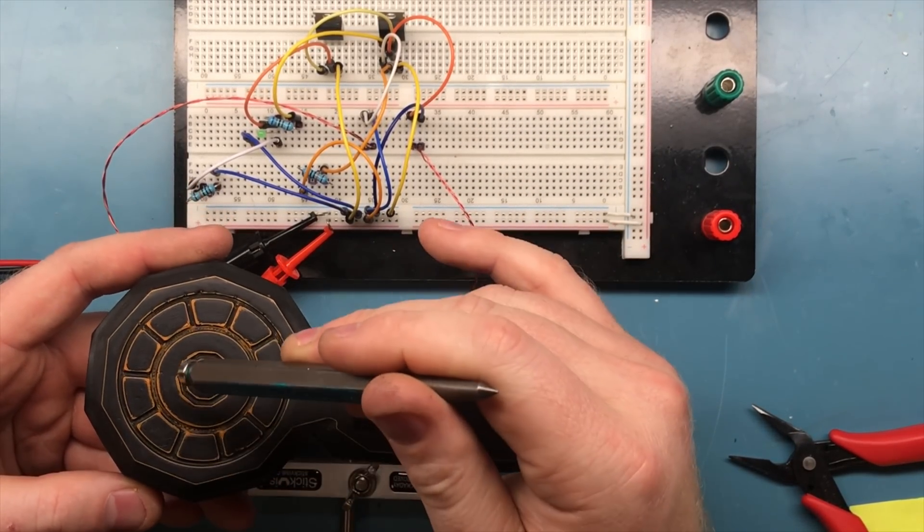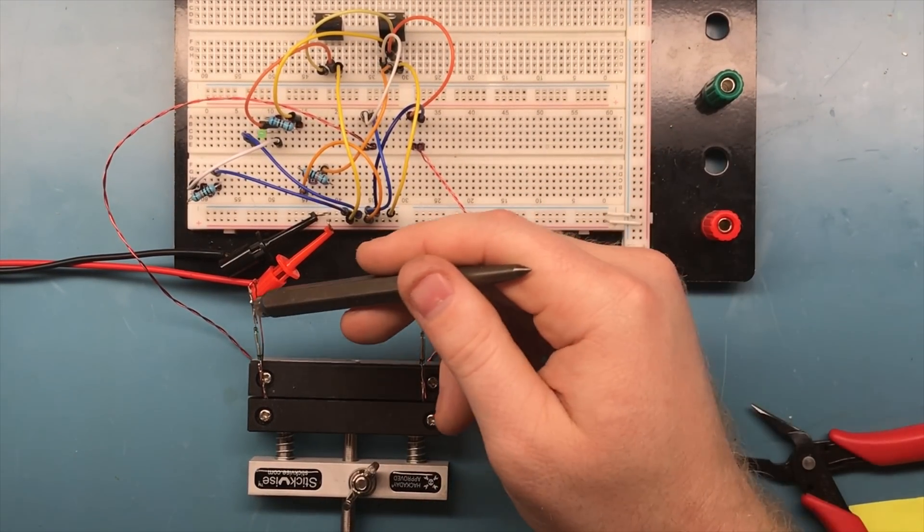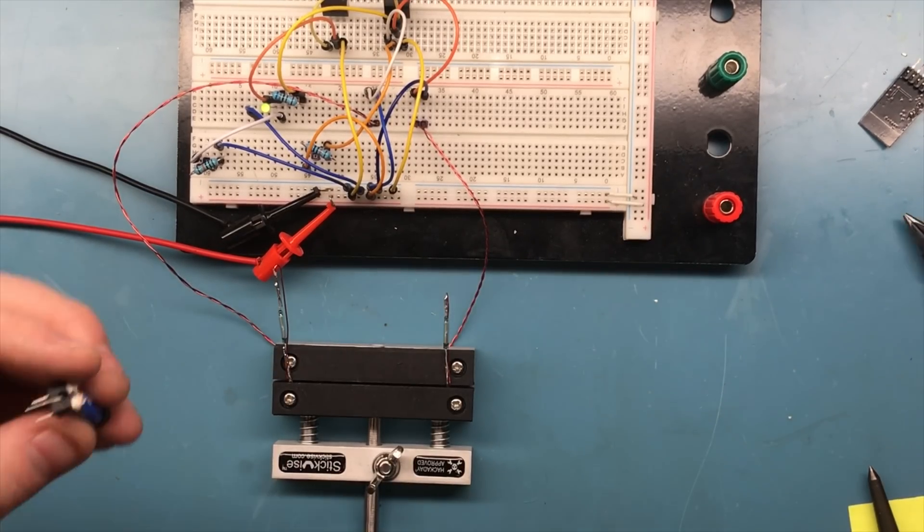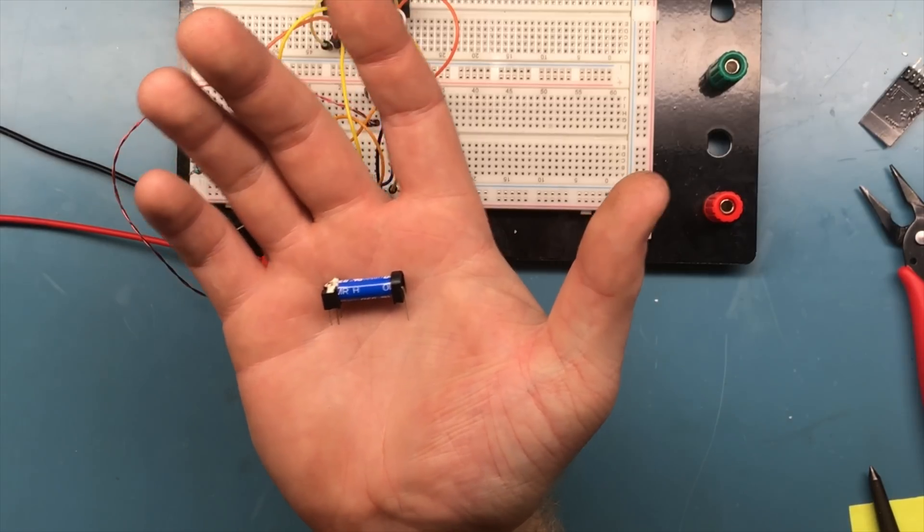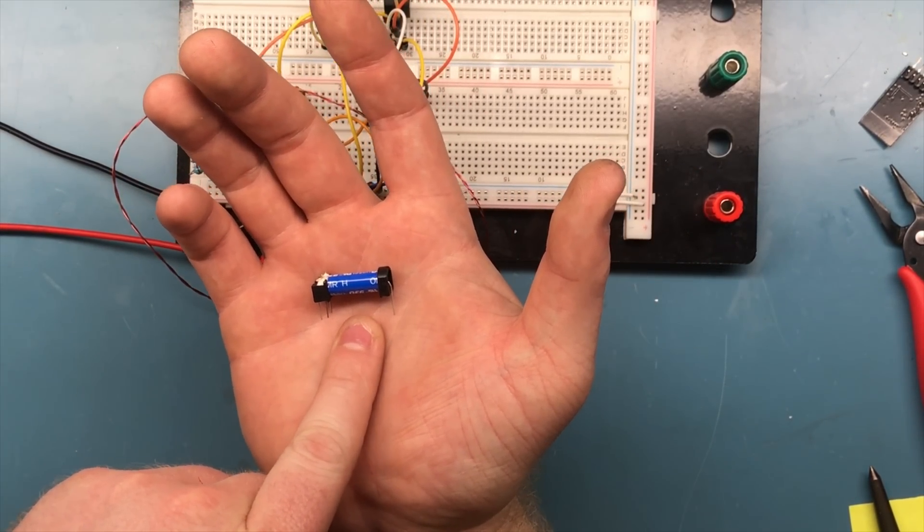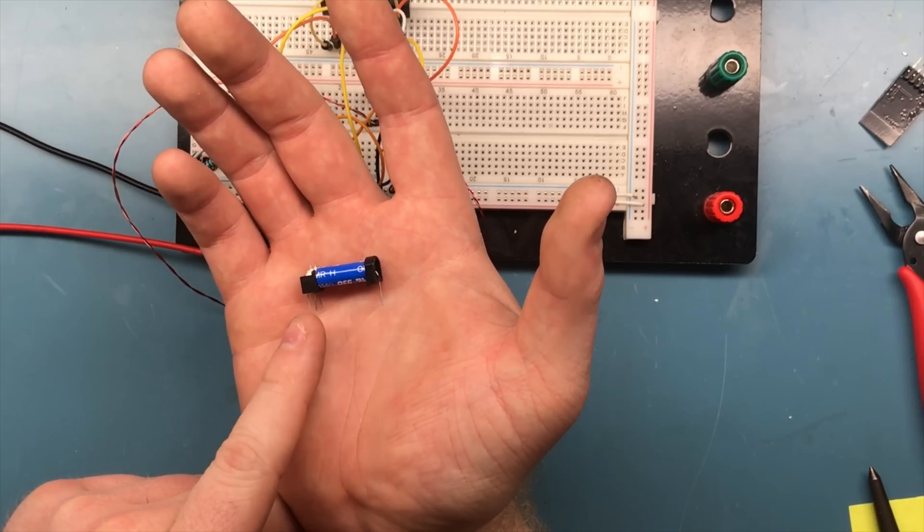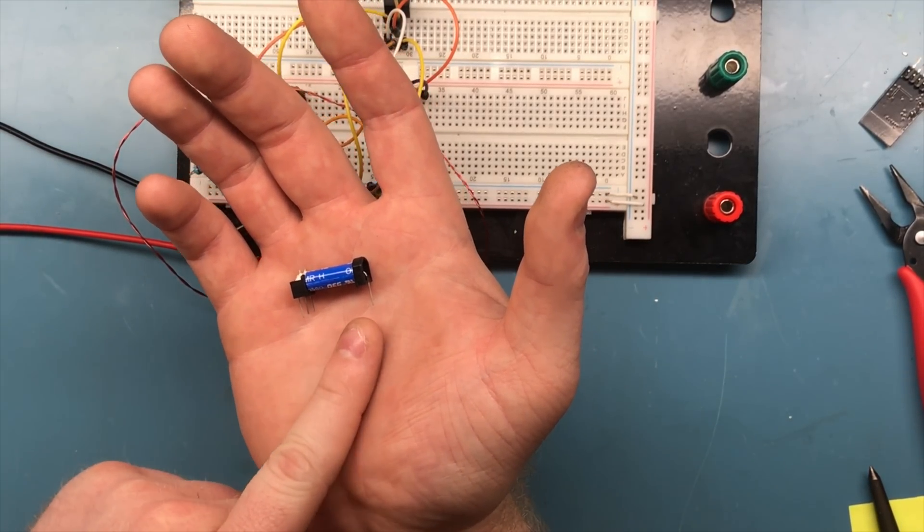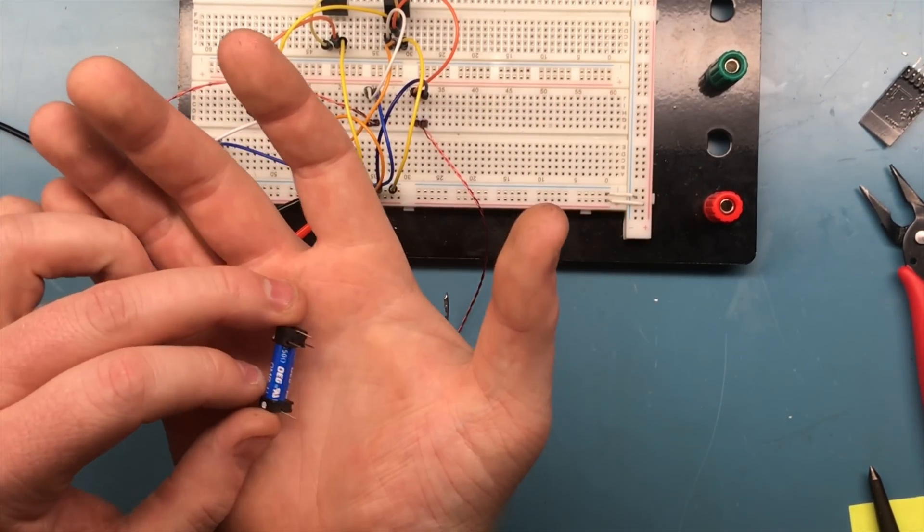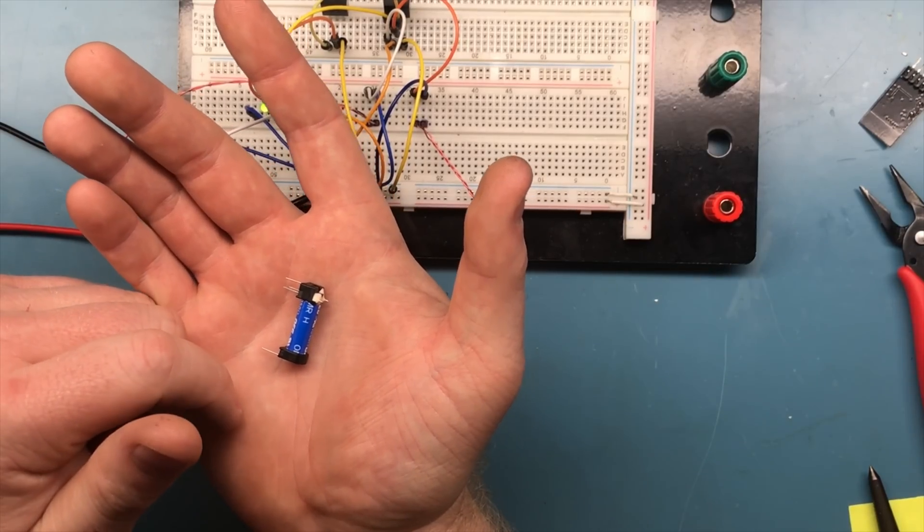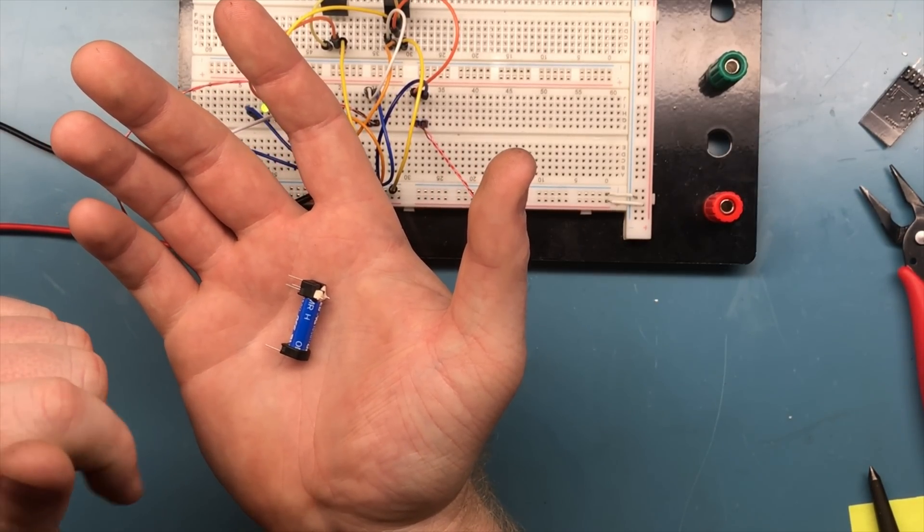Now I didn't have any reed switches on hand, so I took this interesting part which consists of a reed switch inside of a coil. It works kind of like an opto isolator does - when power is applied to the coil, it creates a magnetic field that turns the switch on, but there's some isolation there. In cases where you need isolation between a switch and another part of your circuit, this is a good alternative to an opto isolator.